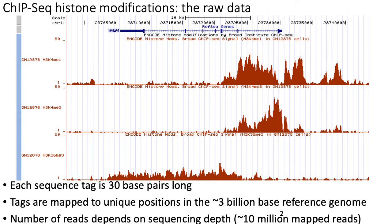Currently, the vast majority of ChIP-seq data available is generally done using short read sequencing. Most of the sequence tags are somewhere on the order of 30 to 50 base pairs. The number of reads you observe in any given dataset depends on what the depth was, but generally for ChIP-seq, people have concluded that you need somewhere around at least 10 million mapped reads in order to get good signal.